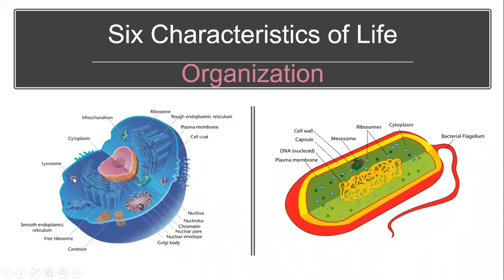Lysosomes you could think of as the little stomach of the cell. They digest materials, just like your stomach. We could go through each one of those organelles and discuss what they do. But in order to be alive, that eukaryotic cell needs that organization. It needs those organelles.